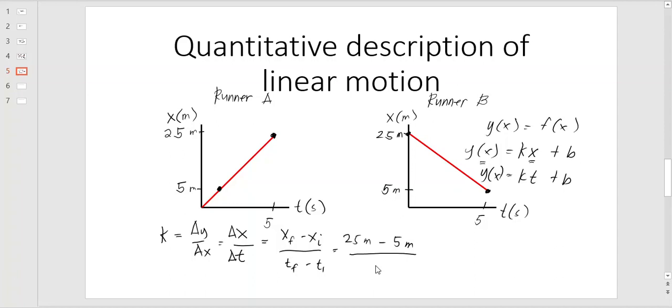And it took about 5 seconds. So we have 20 meters over 5 seconds. So that's the slope. Or we could say 4 meters per second in terms of runner A. So runner A was moving in a positive slope.